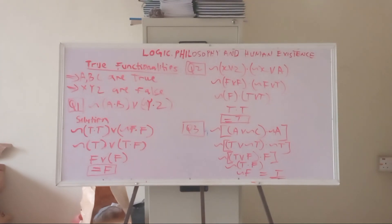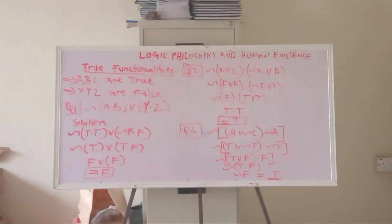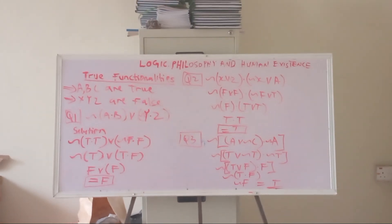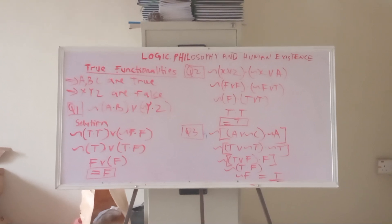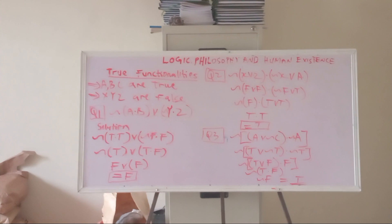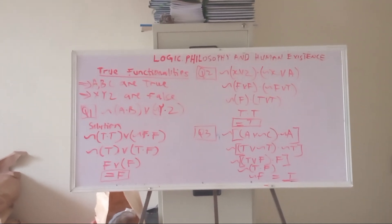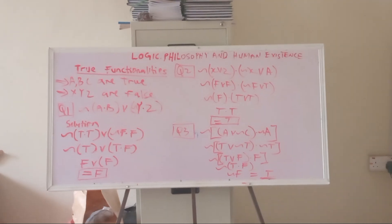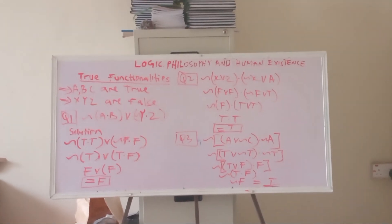The third equation uses two levels of brackets. The question is: ¬[(a ∨ ¬c) ∧ ¬a]. Note that a and c are both true. When you translate to true functionality you get: ¬[(T ∨ ¬T) ∧ ¬T]. Apply the negation: ¬T gives F, so inside you have (T ∨ F) ∧ F.